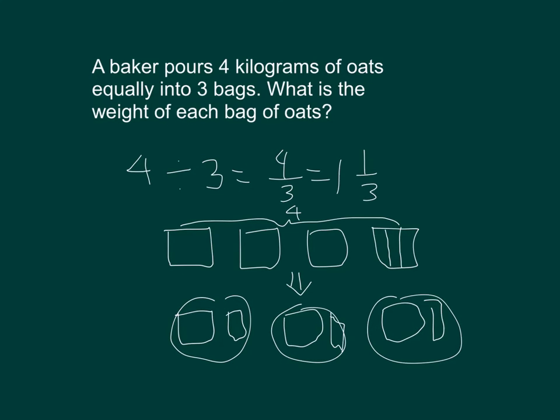Let's run a check for our problem. 3 bags, 1 and 1 third each. That's 3 times 1 and 1 third. It's the same as 1 and 1 third plus 1 and 1 third plus 1 and 1 third. 1 third plus 1 third plus 1 third is 3 thirds, and 1 plus 1 plus 1 is 3. It does equal 4.